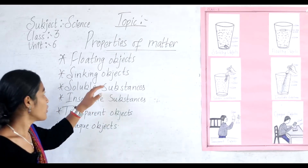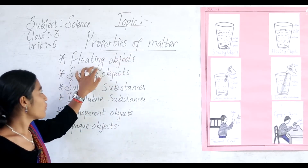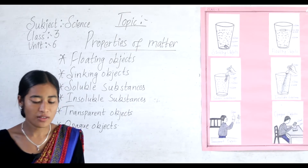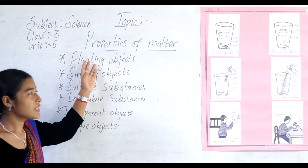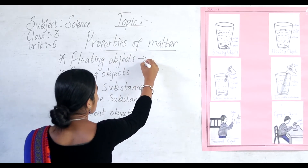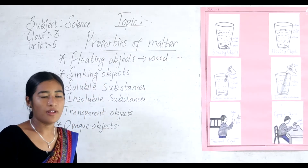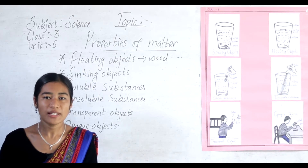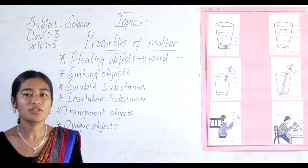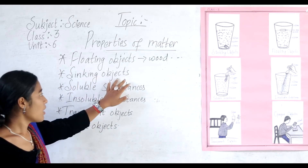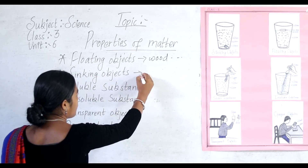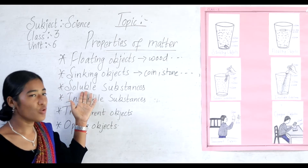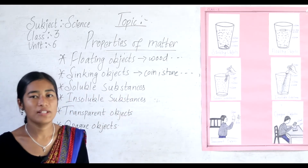Now I will revise the properties of matter again. First: floating objects — those objects that stay near or on top of the water are called floating objects. For example, wood or a piece of paper. Second: sinking objects — those objects which fall downward through the water are called sinking objects.